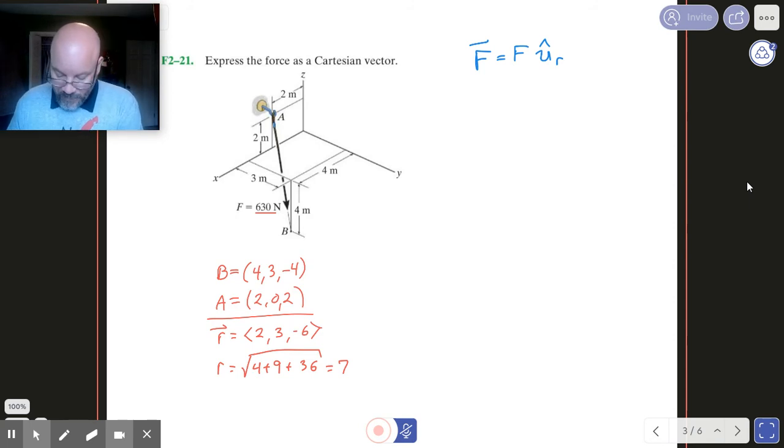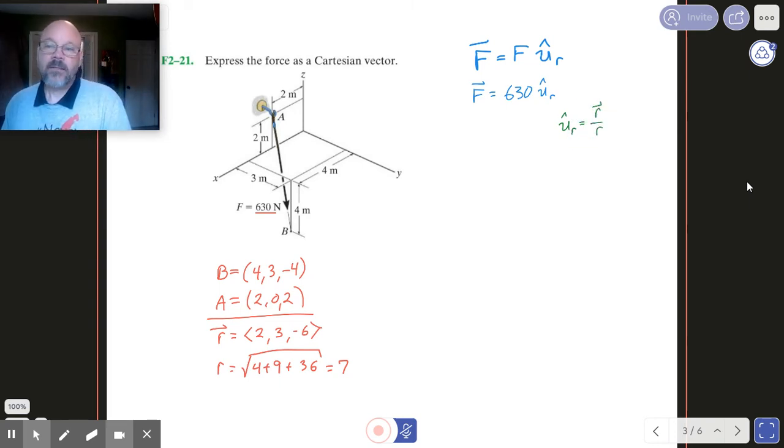So then if we can get that unit vector, then we know that all we have to do is go 630 and put it in the direction of our unit vector. We just got to get that unit vector. Well, that's super easy to do because a unit vector, all we have to do is take the vector itself, the vector of interest, and divide it by its own magnitude. And we've got that.